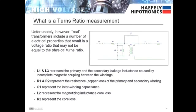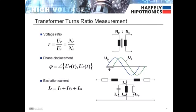Unfortunately, however, real transformers act as a complex RLC circuit with losses that result in a voltage ratio that may not equal the physical turns ratio. In addition to turns ratio, the 2293 can measure voltage ratio, phase displacement, and excitation current.